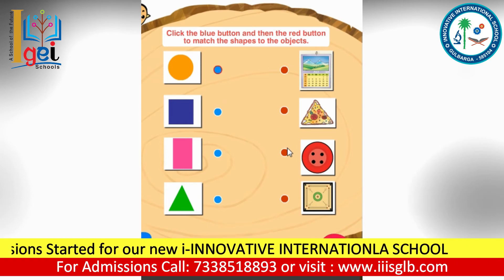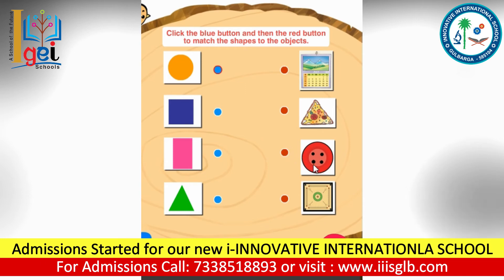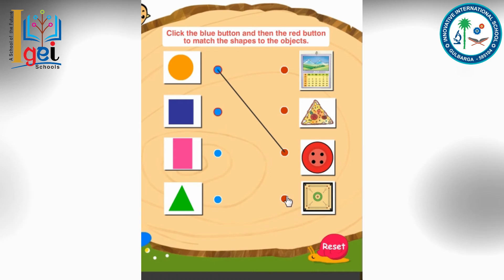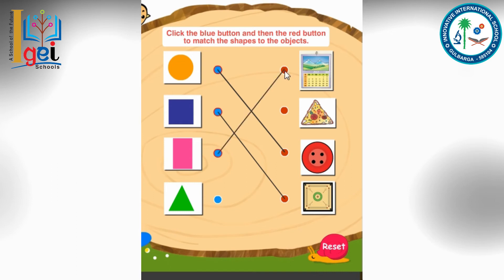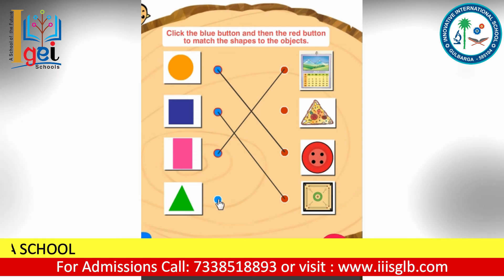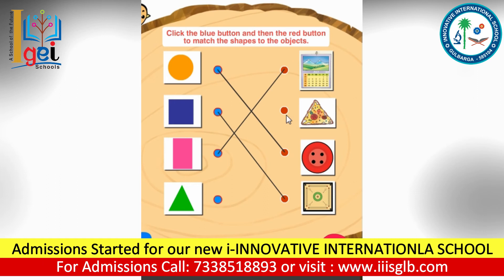So this goes to this — from here. Then goes with square to the square. Then goes with rectangle — this rectangle to this rectangle shape that is a calendar. Then this triangle to this piece.